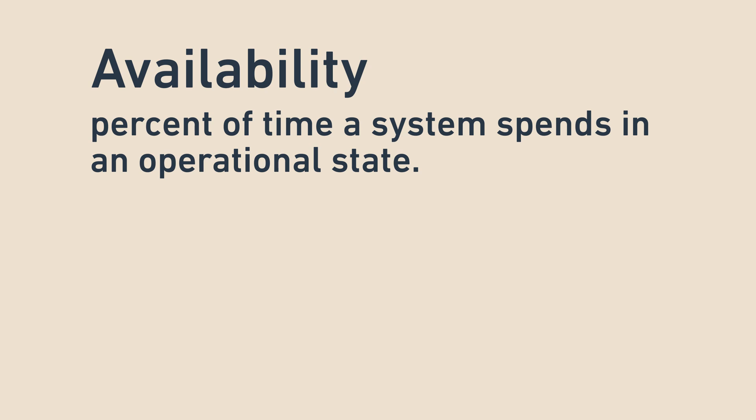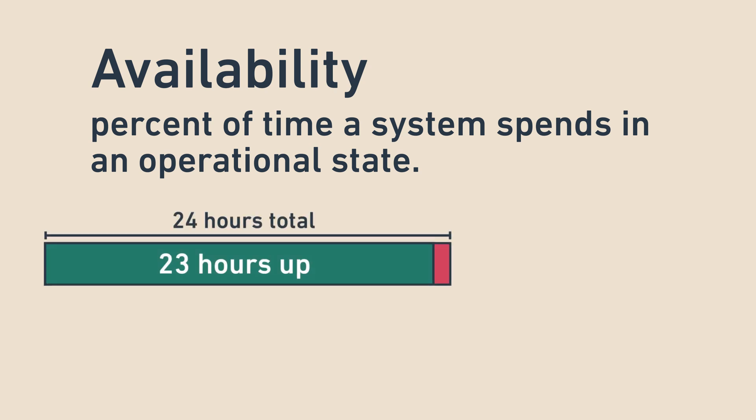For example, if a system is functional for 23 hours every day, then it has 23 over 24 equals 95.8% availability.